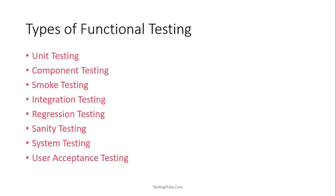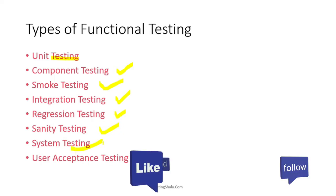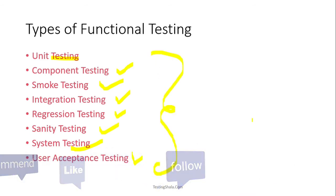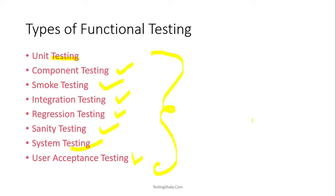The eight different types of functional testing are: unit testing, component testing, smoke testing, integration testing, regression testing, sanity testing, system testing, and user acceptance testing. These are the eight main important functional testing types available. I'm going to explain all of these in detail with examples.